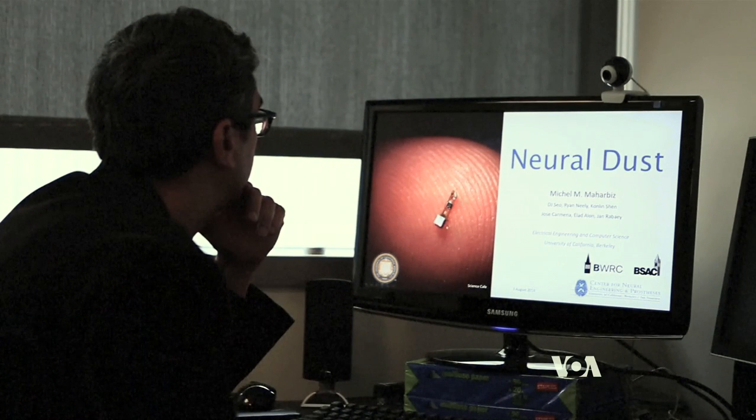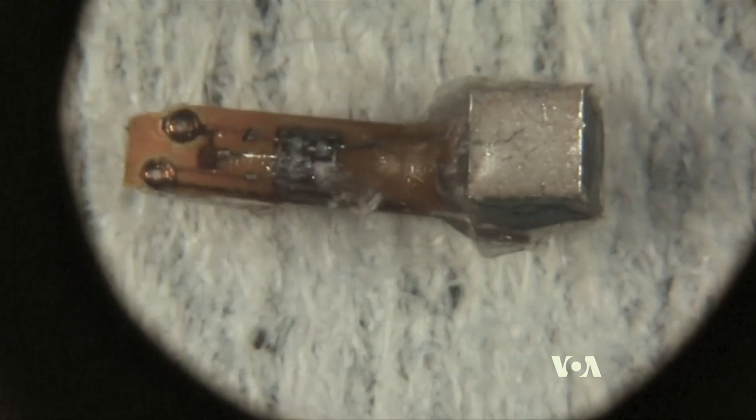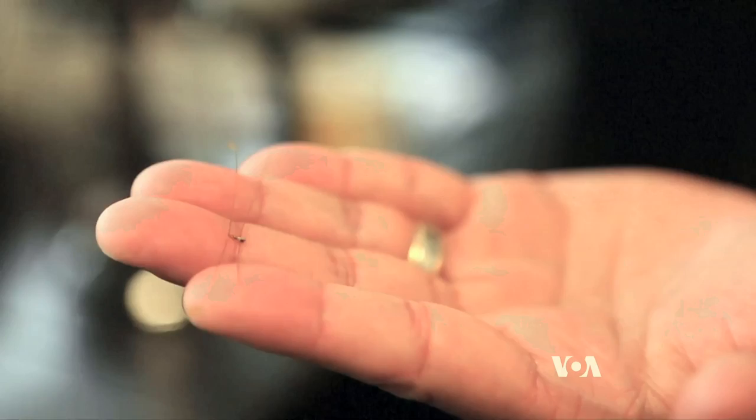But the sensor has to be made even smaller to use it in the brain. So the scientists are working to create neural dust that is only half the width of a human hair.